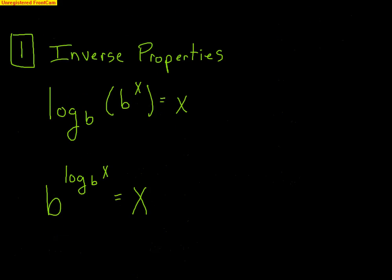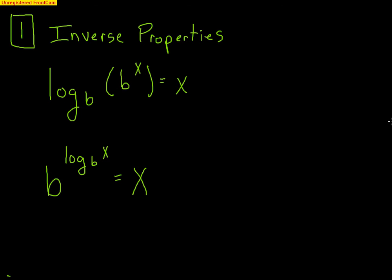The first property is what's called the inverse properties. There are actually two of them, and they piggyback off each other. The first says that log base b of b to the x equals x. Basically, if your base of your log matches the base of your value inside of the log, then those bases cancel each other out, and you just get x.